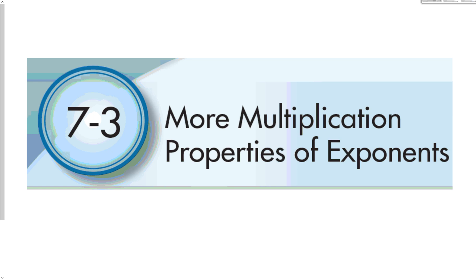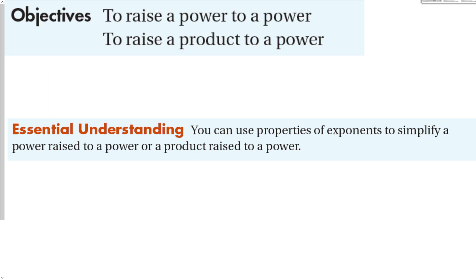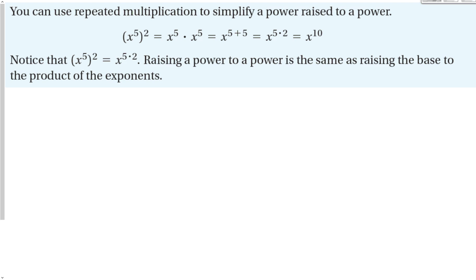7-3, more multiplication properties of exponents. Our objective in this section is to raise a power to a power and to raise a product to a power. We can use the properties of exponents to simplify these expressions, just like in previous sections, using the repeated multiplication property.